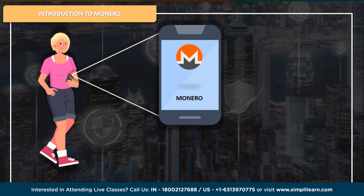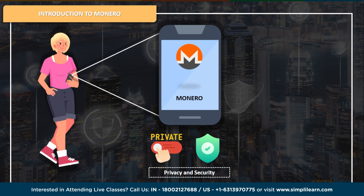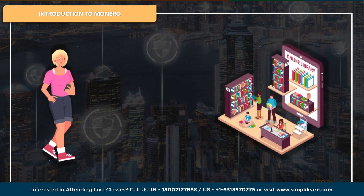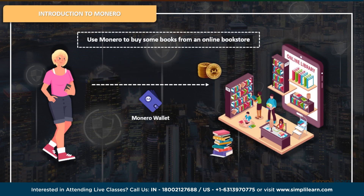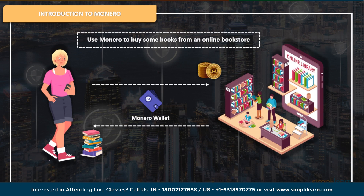She decides to use Monero to buy some books from an online bookstore. She sends the payment from her Monero wallet to the provided address, which is completely private and untraceable. The bookstore confirms receipt of the payment and ships her books. Lena is pleased with the privacy and security of Monero and plans to use it for all her future online purchases.